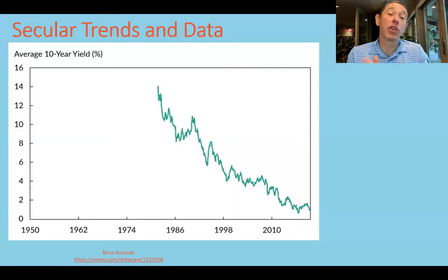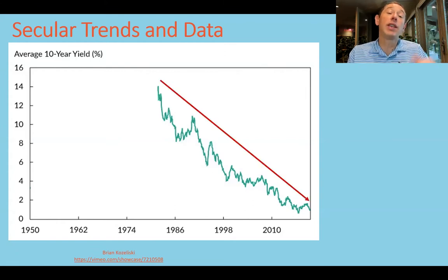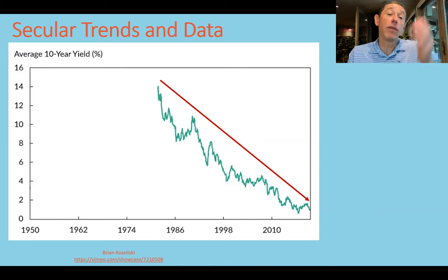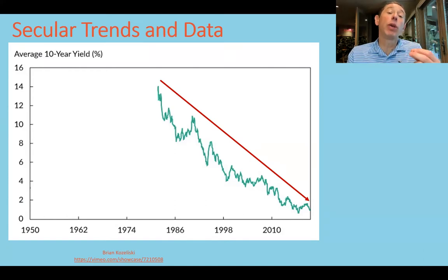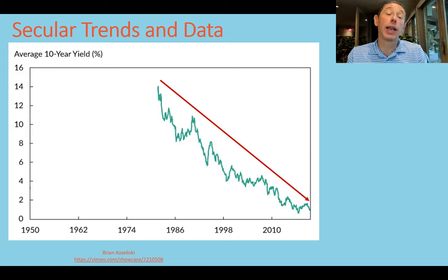One of the challenges in the fixed income market is that over the past 40 years, we've seen this secular decline in interest rates. The concern would be that even if you had all this data — again, 40 years — a lot of people maybe wouldn't even have half of that. And if you found something in there, it would only work when interest rates are slowly declining.